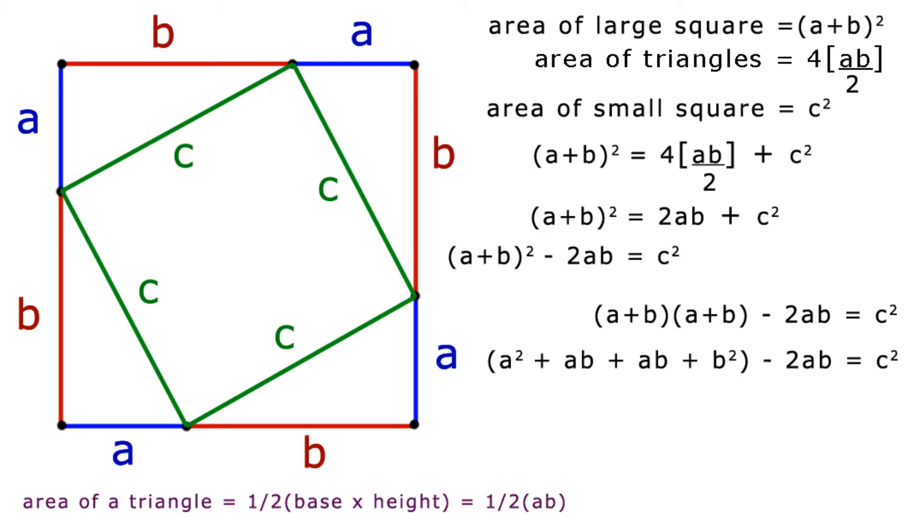If we now collect the terms, we get A squared plus 2AB plus B squared minus 2AB equals C squared. The 2AB and the minus 2AB cancel out, so we obtain A squared plus B squared equals C squared. So I guess that's QED.